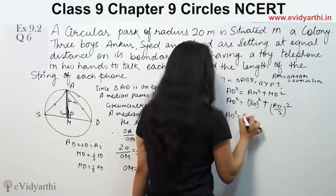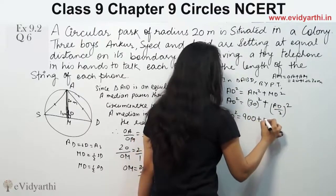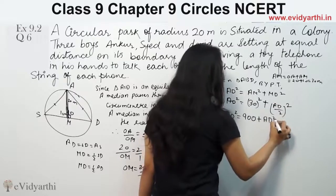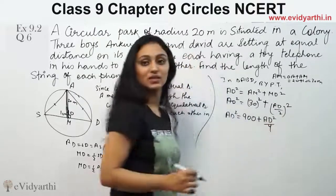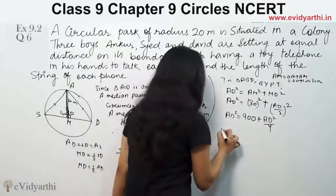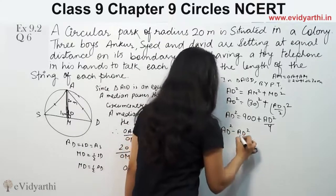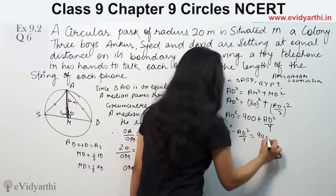So AD square will be equal to 30 squared which is 900. Taking the square, we get AD square by 4. Now putting AD on both sides: AD square minus AD square by 4 equals 900.